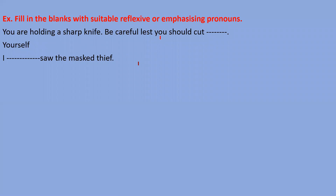Next: 'I saw the masked thief ___.' Vivek says himself, but the correct answer is myself — because the subject is I. According to I, we fill myself; if subject were he, we'd fill himself. Remember: I → myself, you → yourself/yourselves, he → himself, she → herself, it → itself, they → themselves. Next: 'She ___ agreed to help me' — Pranit answers herself. Correct — 'she herself agreed to help me.'